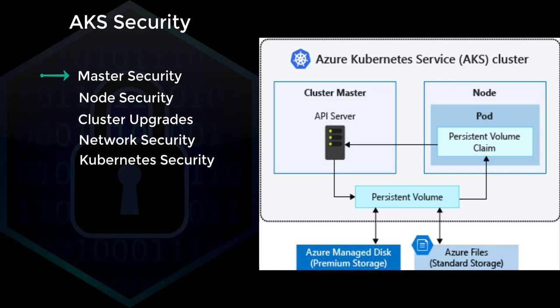By default, this Kubernetes API server will be using a public IP address and also a fully qualified domain name. If you integrate this with Azure Active Directory, you will be able to grant role-based access controls and granular permissioning using the Azure AD permissioning model.